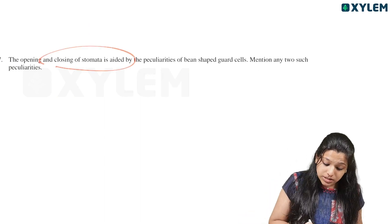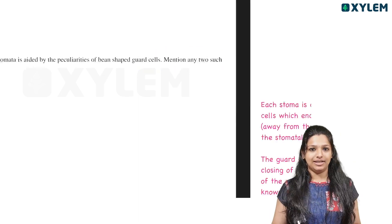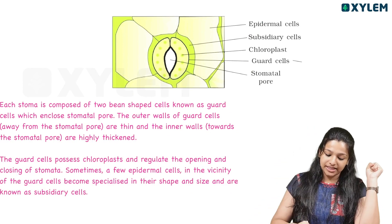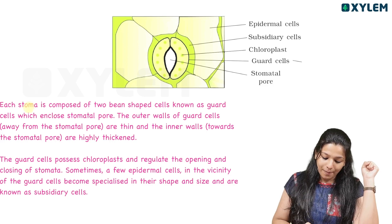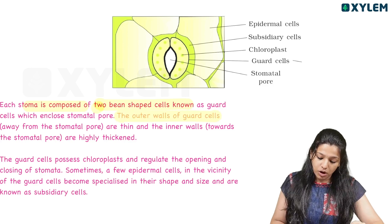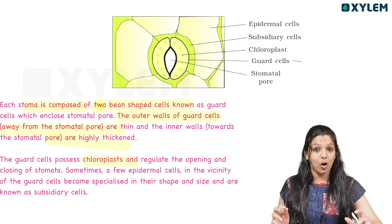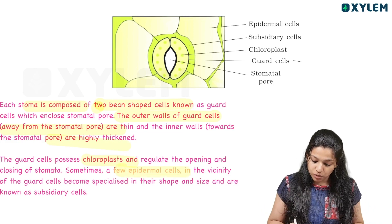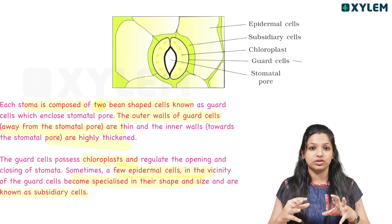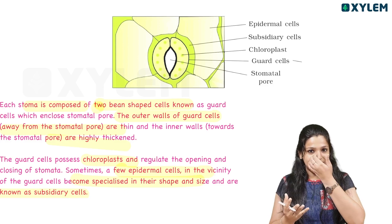The opening and closing of stomata is aided by the peculiarities of bean-shaped guard cells. Mention two such peculiarities. Bean-shaped guard cells have an outer wall that is thin and inner walls that are highly thickened. When the guard cells contain chloroplasts, that aids the opening and closing of stomata.